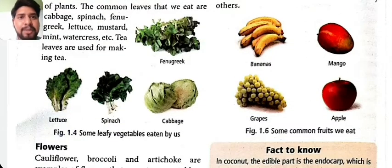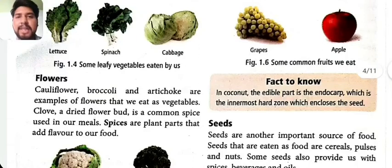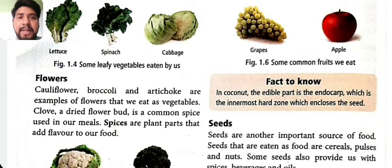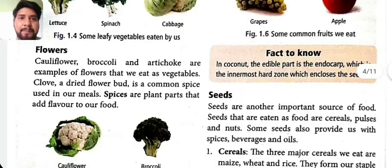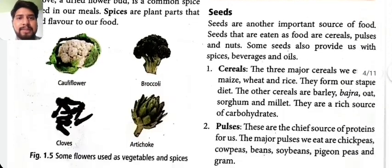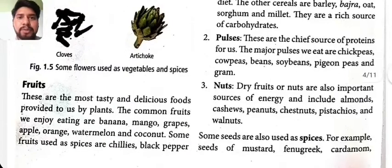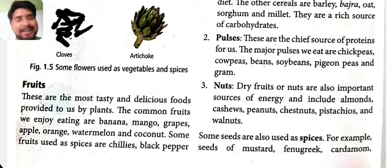Flowers: cauliflower and broccoli are examples of flowers that we eat as vegetables. Clove, a dried flower bud, is a common spice used in our meals. Spices are plant parts that add flavor to our food.